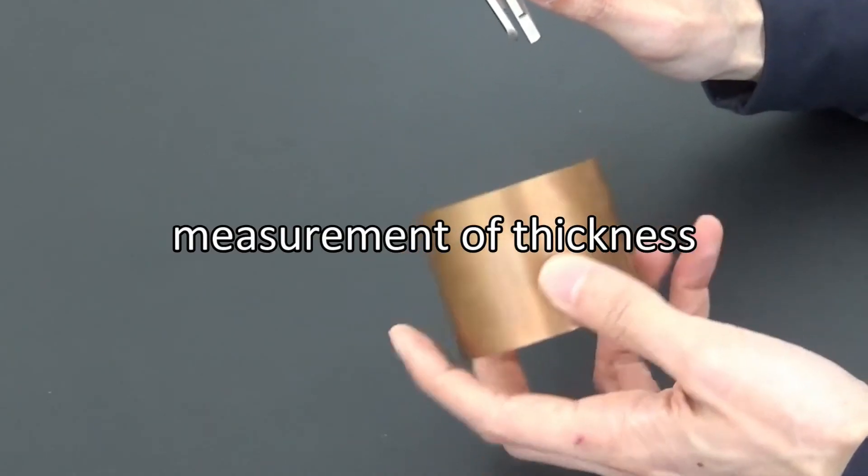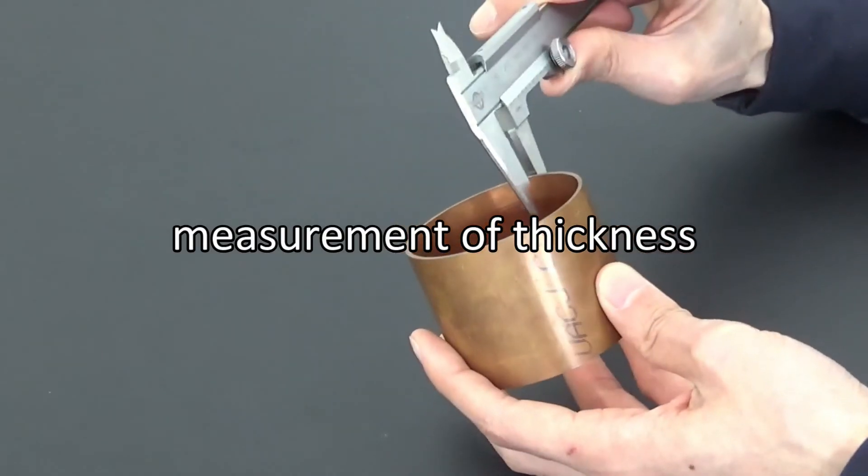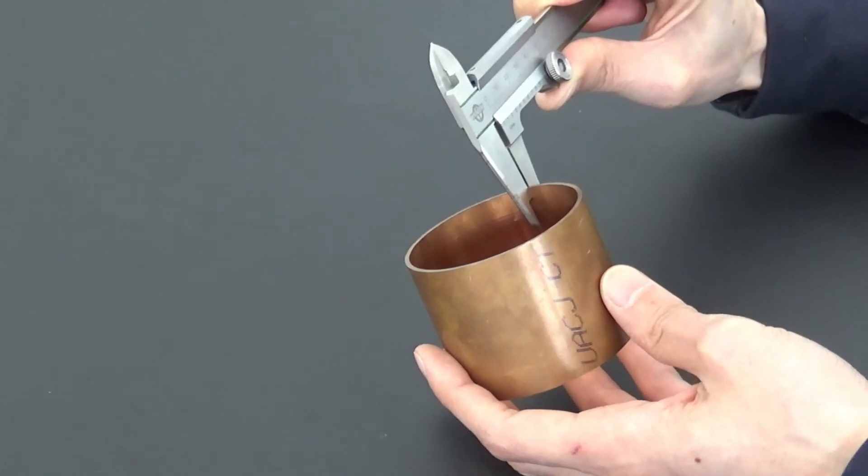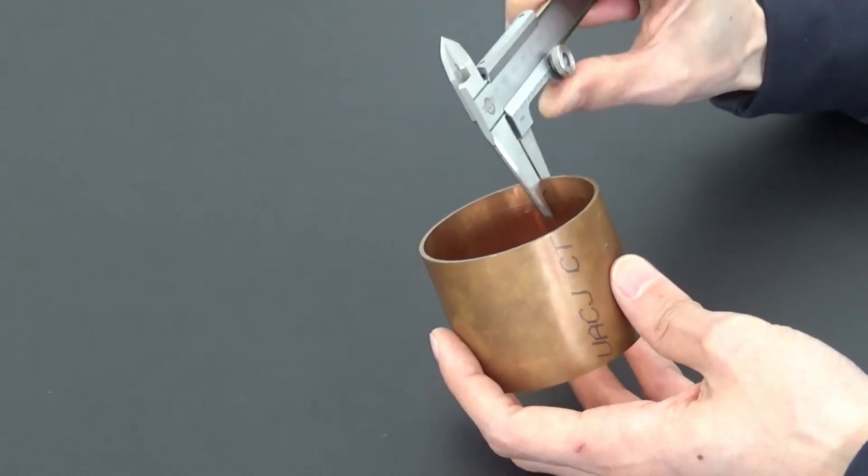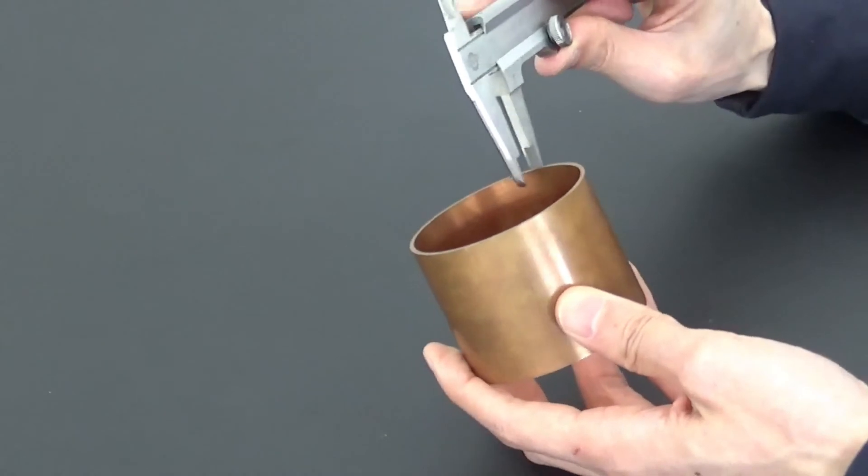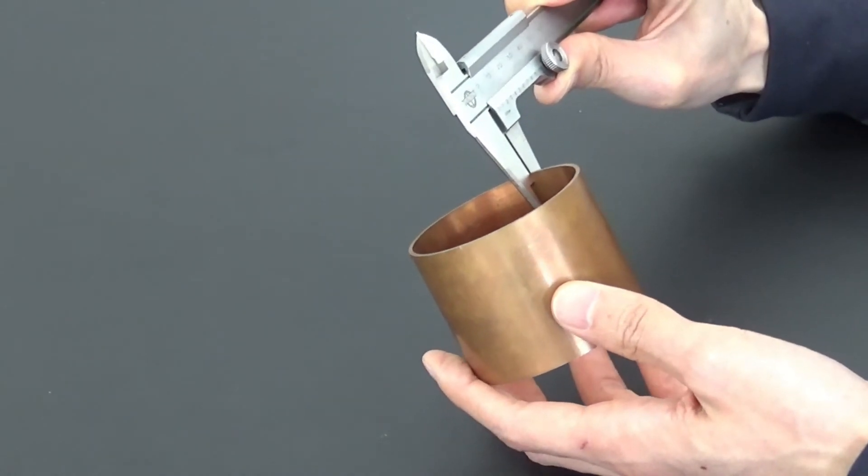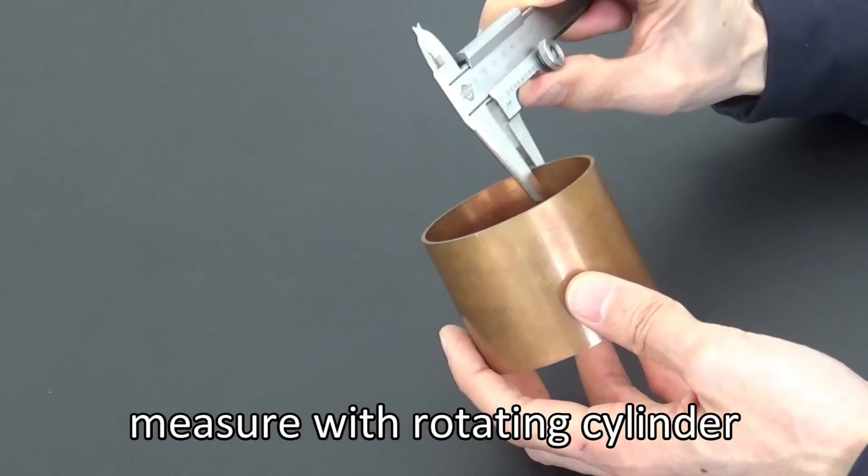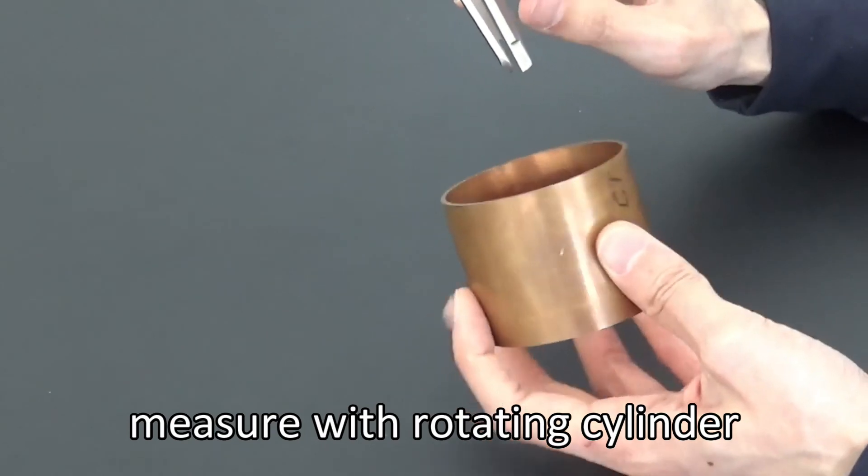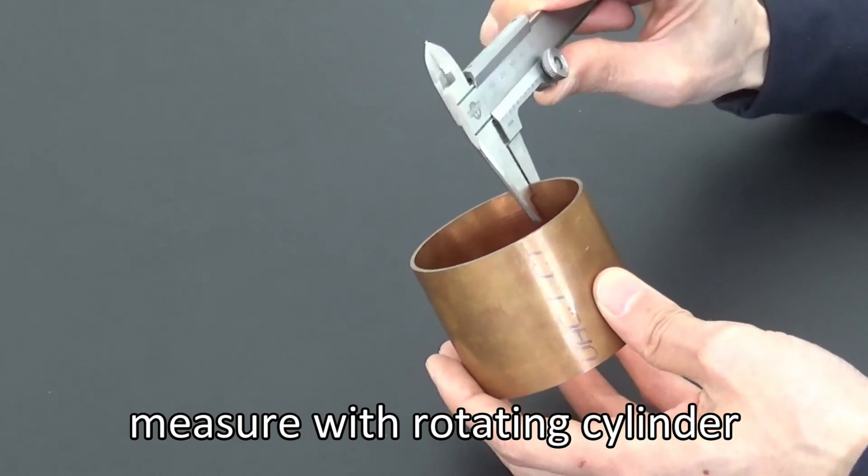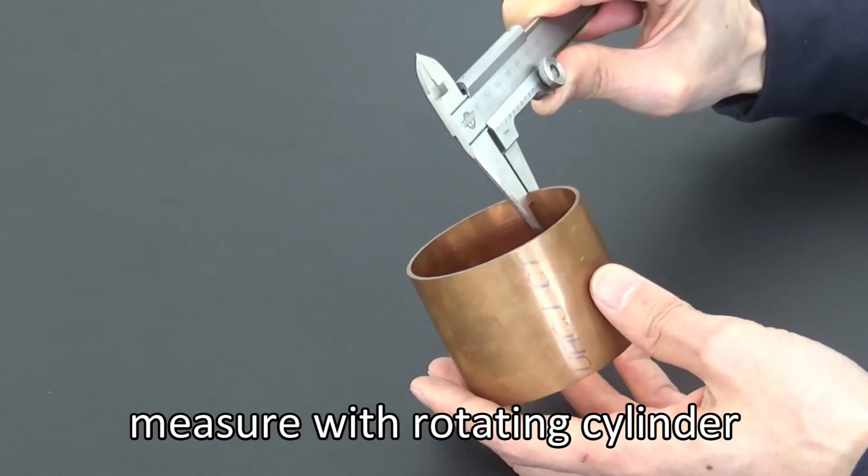The last step is to measure the thickness of the cylinder. In this case, it is especially important that the jaws are perfectly aligned with the edge of the cylinder to get an accurate measurement. Even in this measurement, the thickness may vary slightly from place to place, so rotate the cylinder to take the measurement.